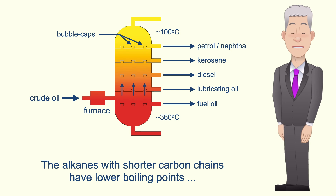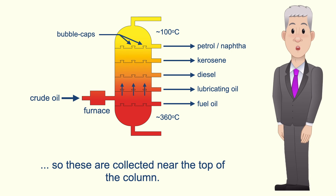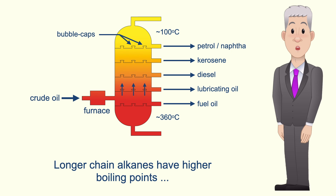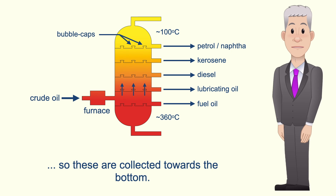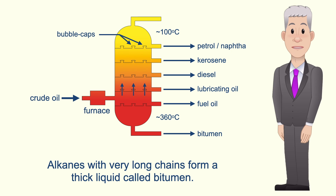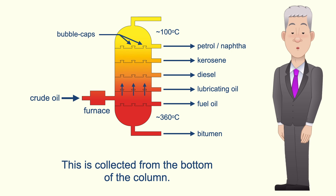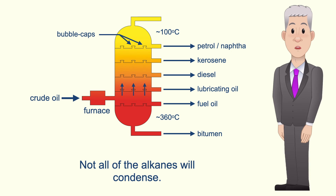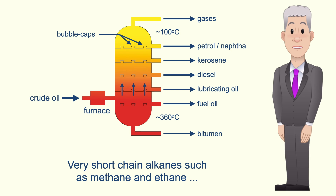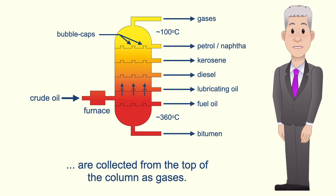Alkanes with shorter carbon chains have lower boiling points, so these are collected near the top of the column. Longer chain alkanes have higher boiling points, so these are collected towards the bottom. Alkanes with very long chains form a thick liquid called bitumen, which is collected from the bottom of the column. Not all of the alkanes condense — very short chain alkanes such as methane and ethane are collected from the top of the column as gases.